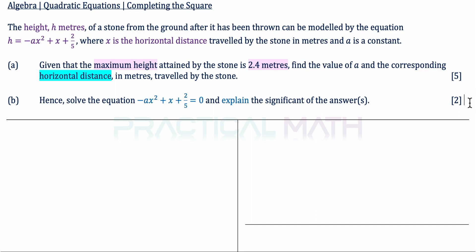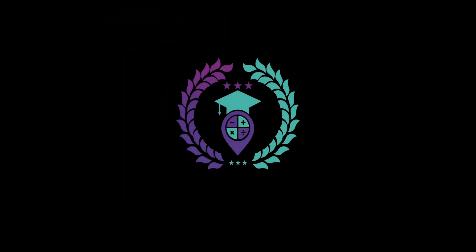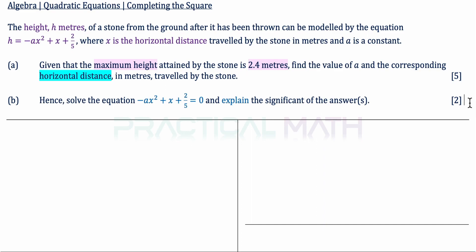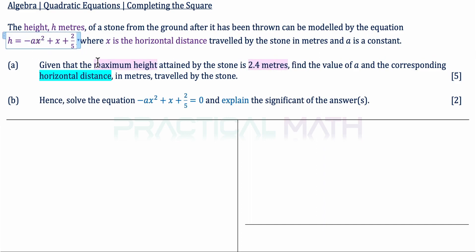You might want to pause this video to give this question a try, and when you're ready, keep watching. Now let us begin the question by looking at this equation. The highest power is x squared and we are given the maximum height of 2.4 meters. Putting together the x squared equation and a maximum height means we will need to use the method of completing the square.